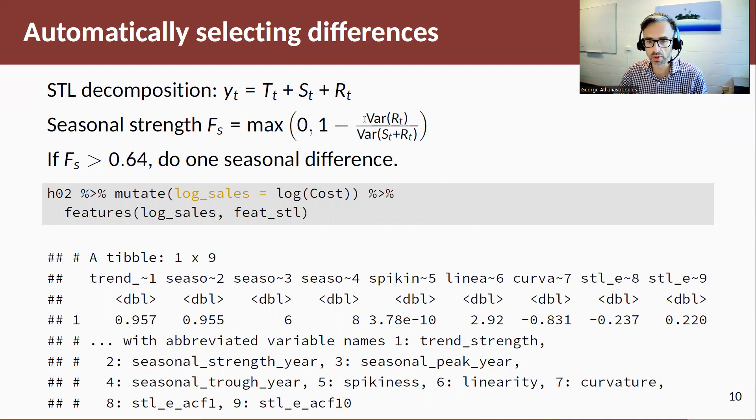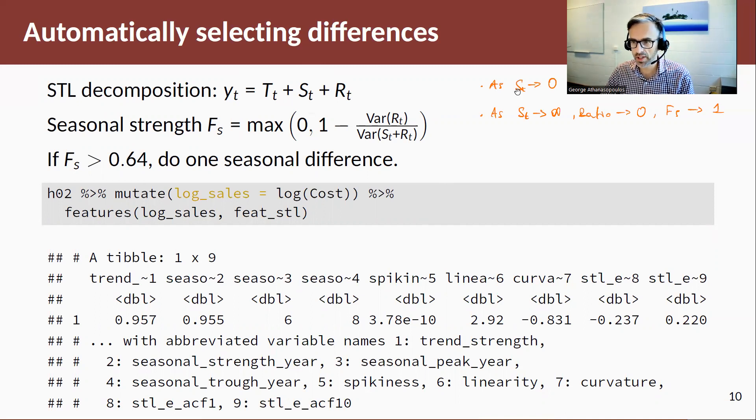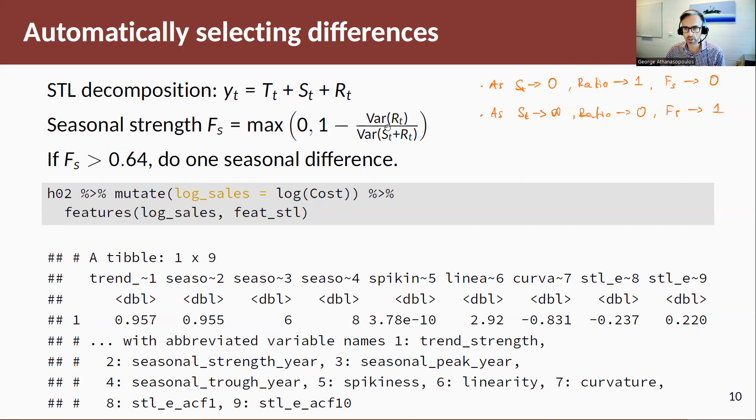So basically we do an STL decomposition and then we look at the ratio between the remainder and the seasonal component. Now this is what they call the seasonal strength FS. So this FS ranges between 0 and 1. If the seasonal component or the variance in the seasonal component is low, so compared to R, then this ratio goes to 1, hence this seasonal strength goes to 0, so we have low seasonal strength. If ST is strong, hence the variance of this increases, hence this ratio will go to 0, then FS goes to 1, hence we have a strong seasonal component.